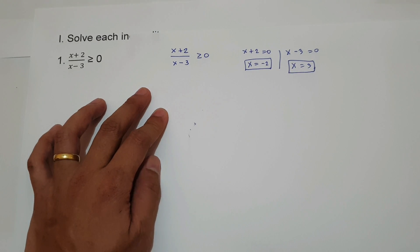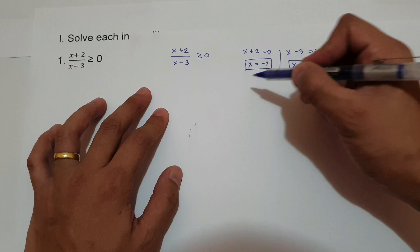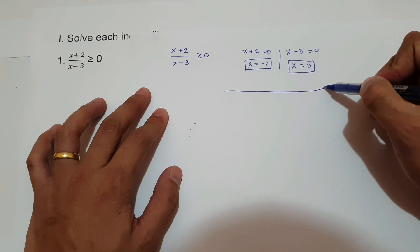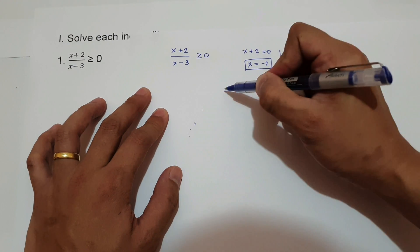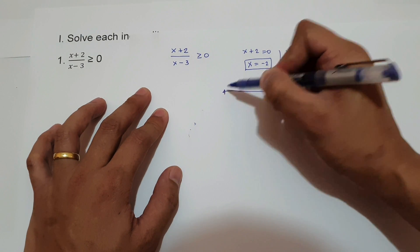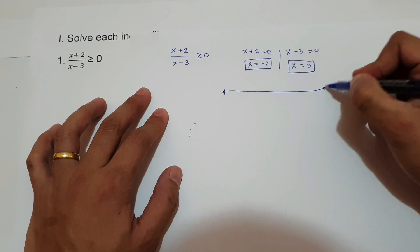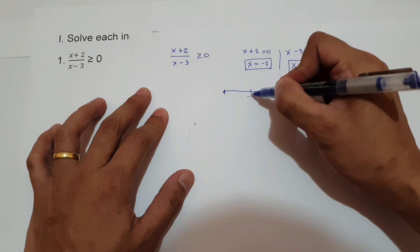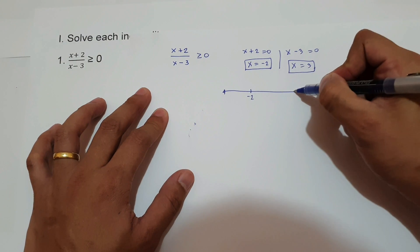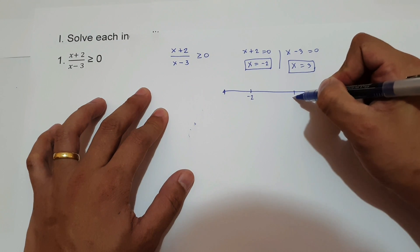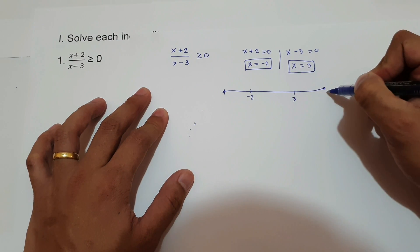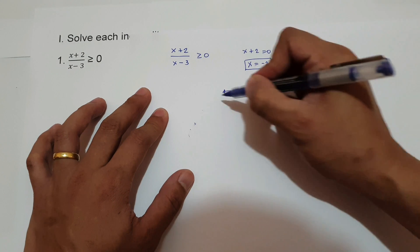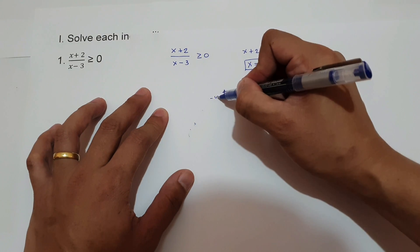The next step is we're going to draw a number line. We're going to have a vertical line test. We plot negative 2, positive 3, positive infinity, and negative infinity.